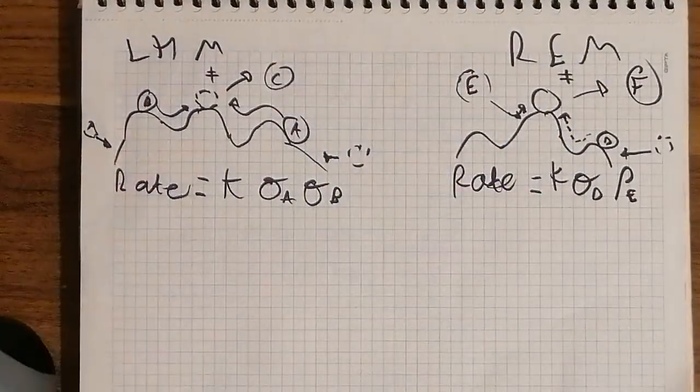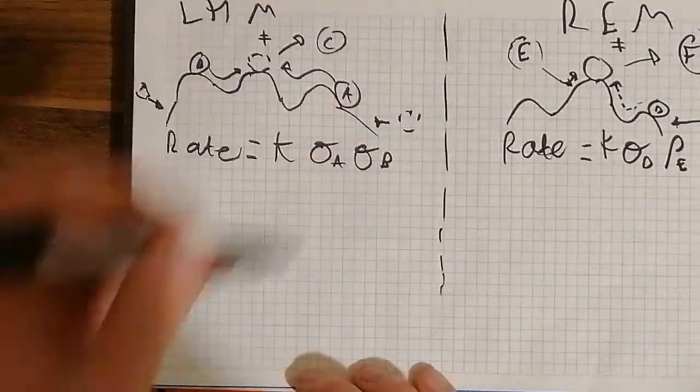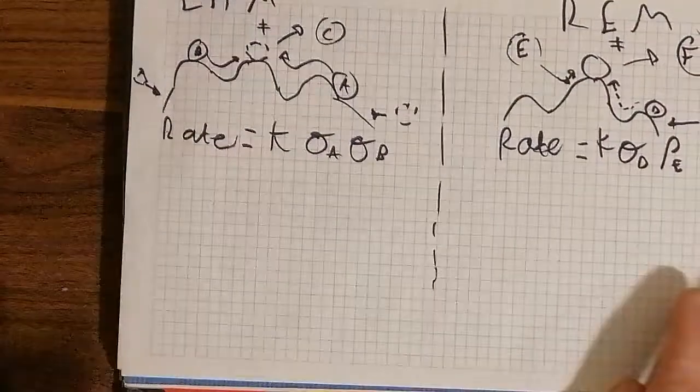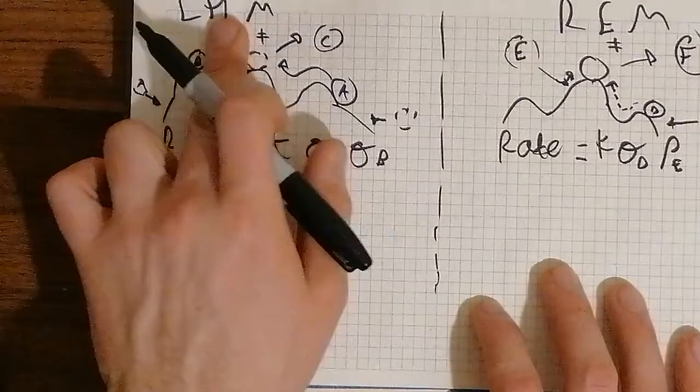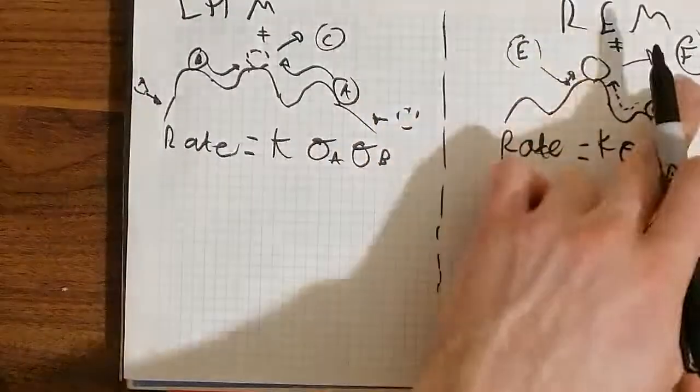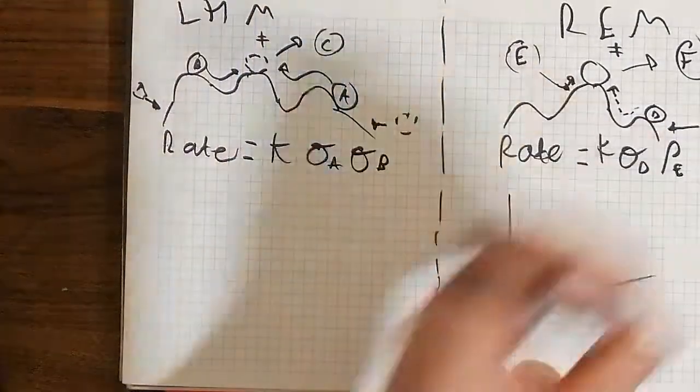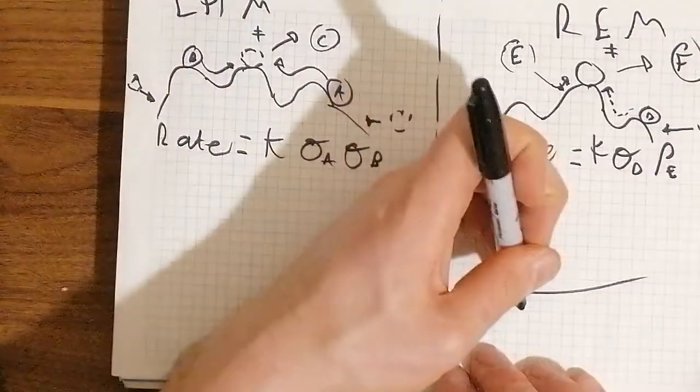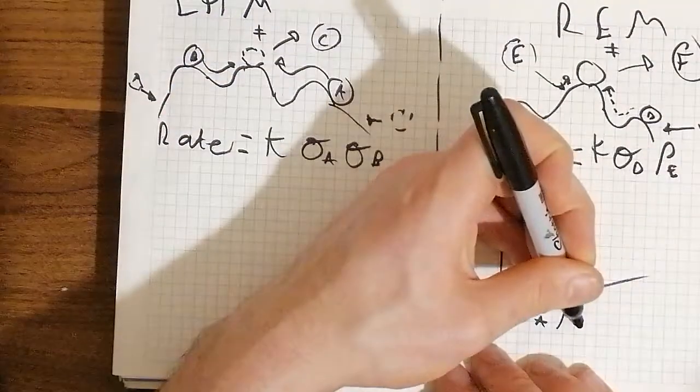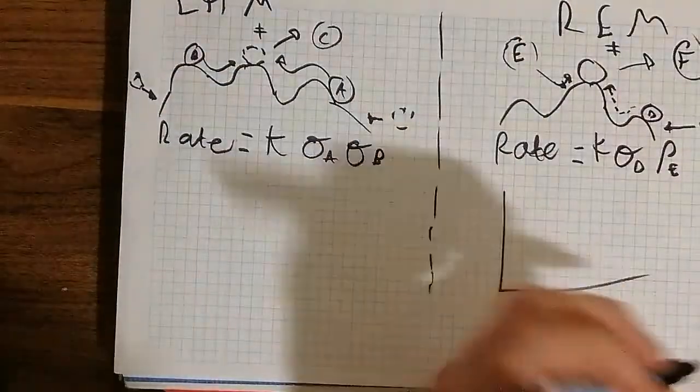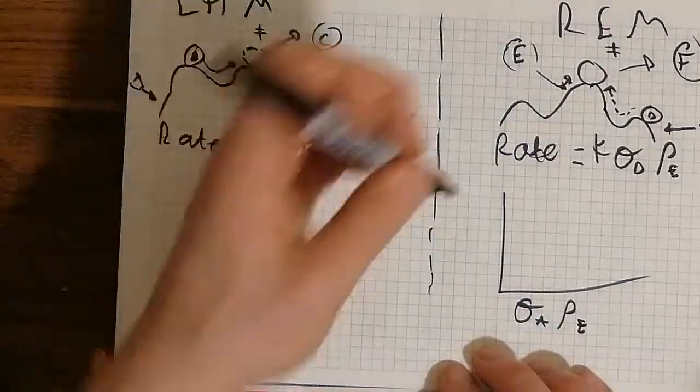So if we draw a graph of, let's just do this. So if we want to prove whether a reaction is this one, LHM or REM, then we have to draw a graph. So if we draw a graph and we put surface coverage of A and the partial pressure of E. And then we have the rate here.